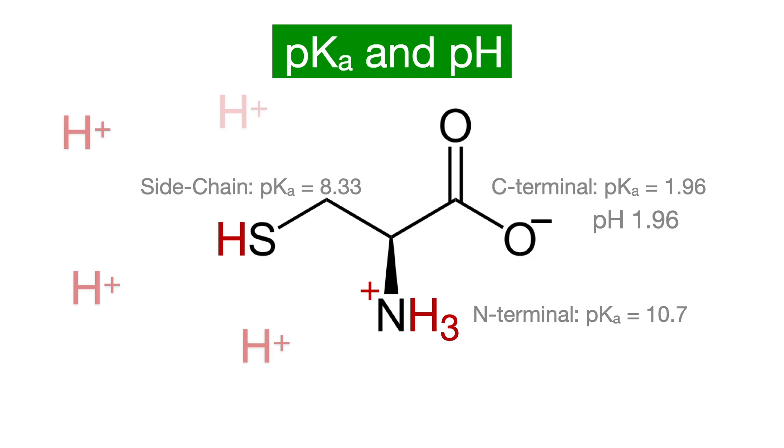As the pH of the solution continues to increase, reaching a pH equal to the next highest pKa, which is 8.33 on the side chain, that acidic group will be deprotonated at pH of 8.33, leaving behind a negative charge on the sulfur.